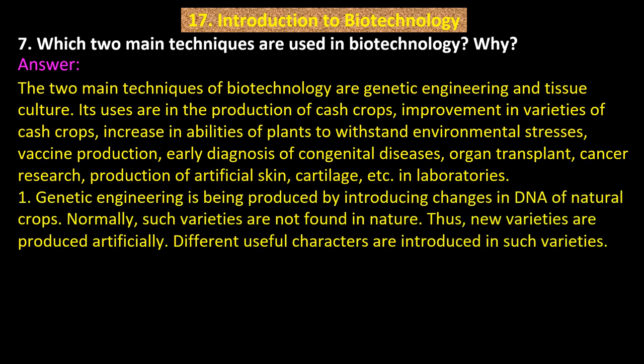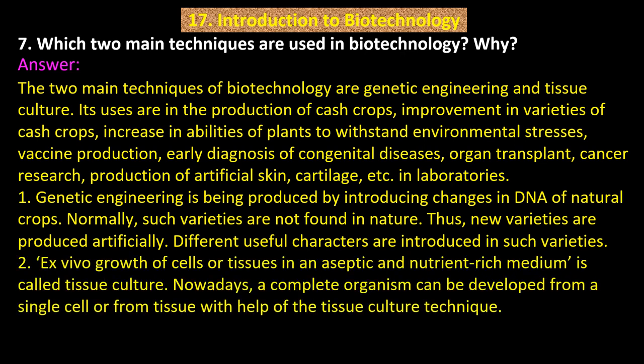Point 1: Genetic engineering involves introducing changes in the DNA of natural crops. Normally such varieties are not found in nature; thus new varieties are produced artificially and different useful characters are introduced in such varieties. Point 2: Ex vivo growth of cells or tissues in an aseptic and nutrient-rich medium is called tissue culture. Nowadays, a complete organism can be developed from a single cell or from tissue with the help of the tissue culture technique.